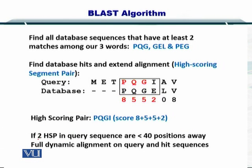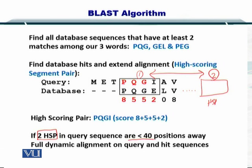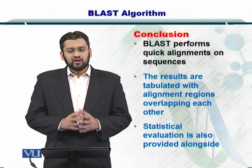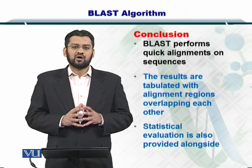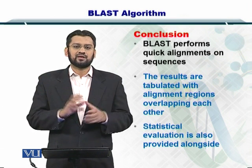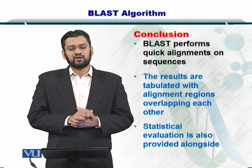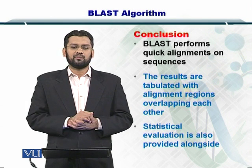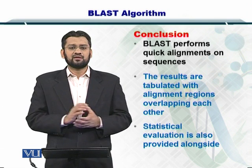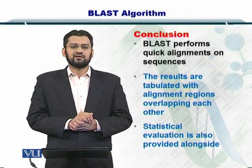Now, if you have two HSPs within the database and the distance between them is less than 40 amino acids, then you perform full dynamic alignment on the query and hit sequences. This means we compute the full alignment because it is probably a very good match. In this way, BLAST reduces the computational cost by only performing full alignments for closely located HSPs. BLAST is available online and you can use it to quickly sort, align, and compare nucleotide and protein sequences. The results are tabulated and you can look at the details of the statistical evaluations as well.